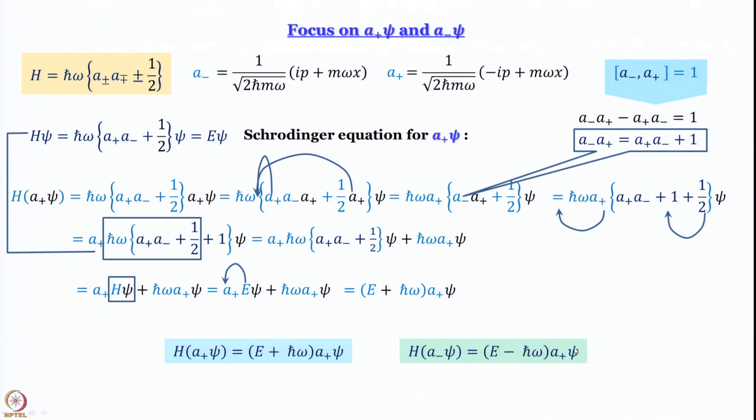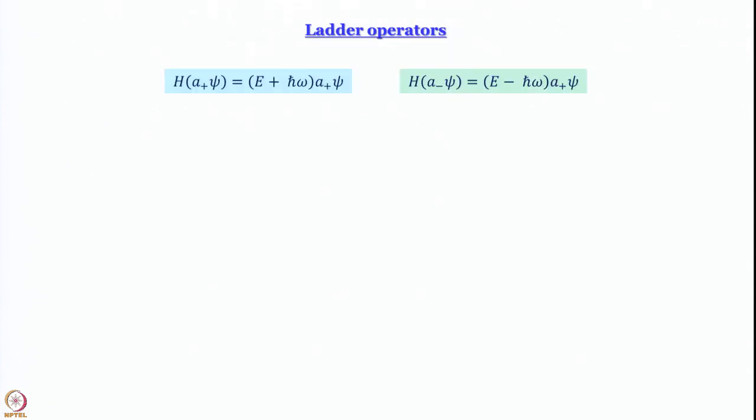Through all this mathematical manipulation: when a⁺ operates on ψ, it generates a new wave function whose energy is higher by one quantum of vibrational energy. That is why it is called a step-up or raising operator. Similarly, please work out yourself that H·(a⁻ψ) = (E − ℏω)·(a⁻ψ) — a⁻ lowers the energy by one quantum and is called the lowering operator.